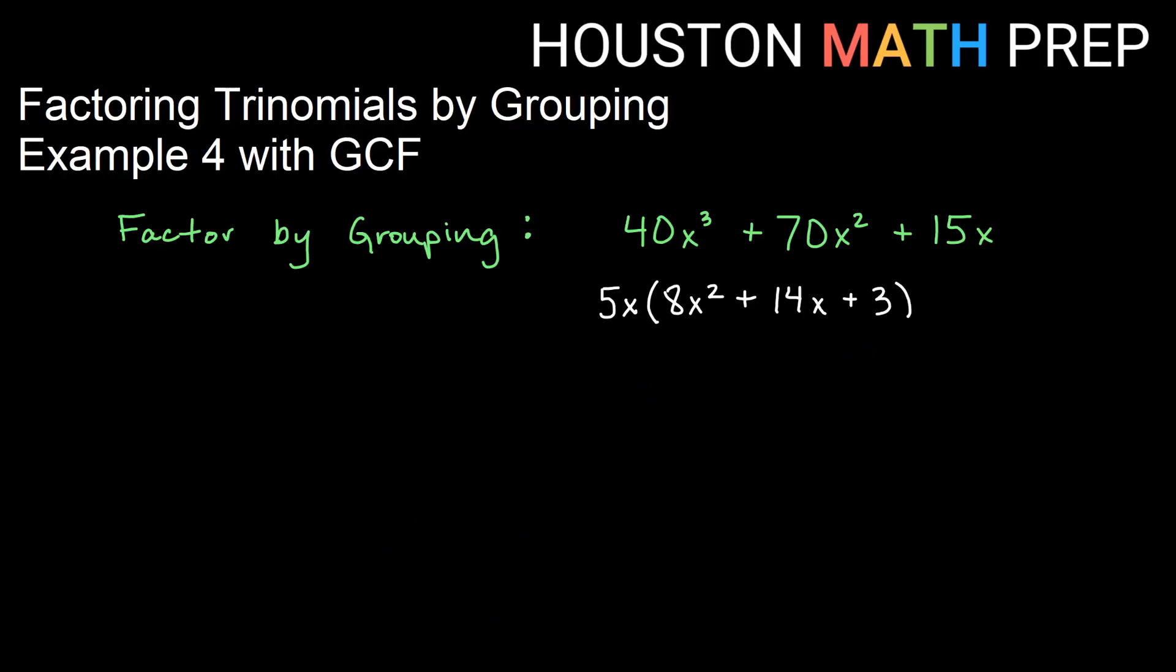So we go in here and we say, well, this is my A and my B and my C. And for factoring by grouping, we will be looking at A times C and comparing it to B as we've done in all the other videos. So A times C in this one is going to be 24. B is 14 in this one.